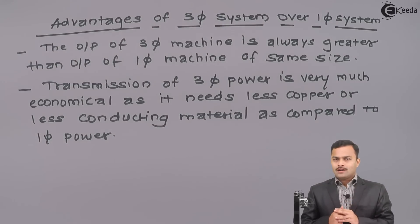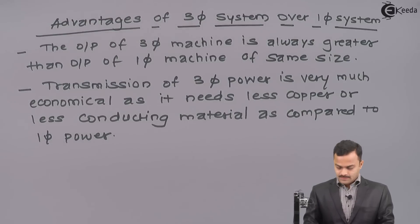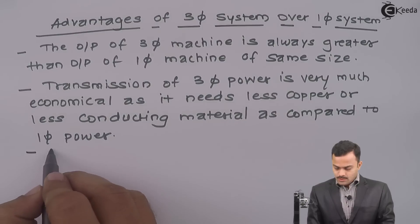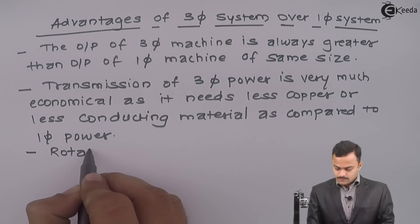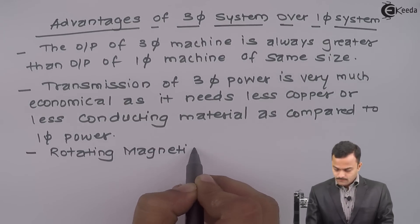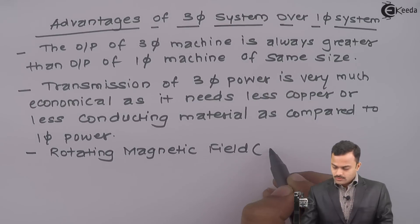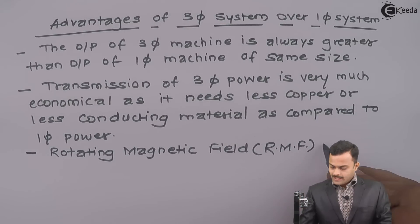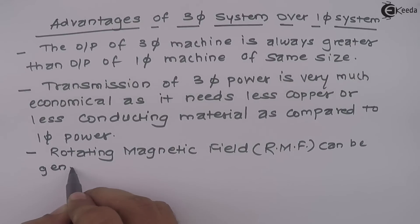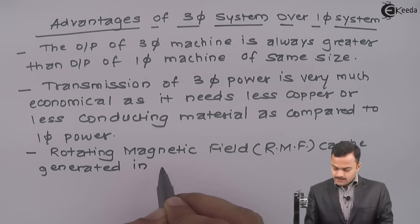Therefore, we got a single phase supply but actually we generate three phase supply at the generating station. Then three phase supply voltage is raised by the transformer and then it is transmitted because of this reason.